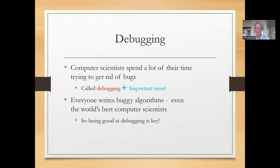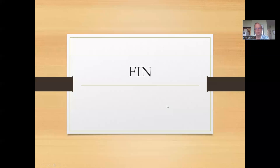So we actually still have the first computer bug on record. So we spend a lot of time fixing these bugs, and that process is called debugging. And everybody writes buggy algorithms, even the best computer scientists. So being good at finding the problems and figuring out how to fix them is a key to being successful at computer science. And that's it for today. Thank you very much.